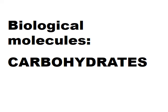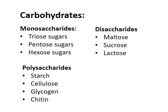This video is about carbohydrate structure and some of the functions of the different carbohydrates. There are three main groups of carbohydrates, starting with the monosaccharides. Mono suggests one and saccharide refers to sugar. These are simple sugars determined by the number of carbon atoms they have: a triose sugar has three carbons, a pentose sugar has five carbons, and a hexose sugar has six carbon atoms.